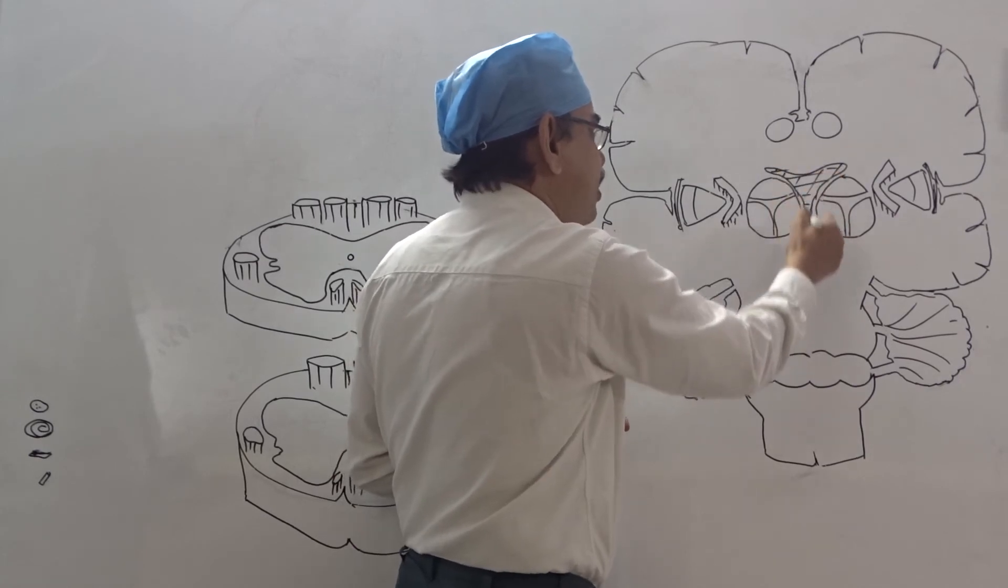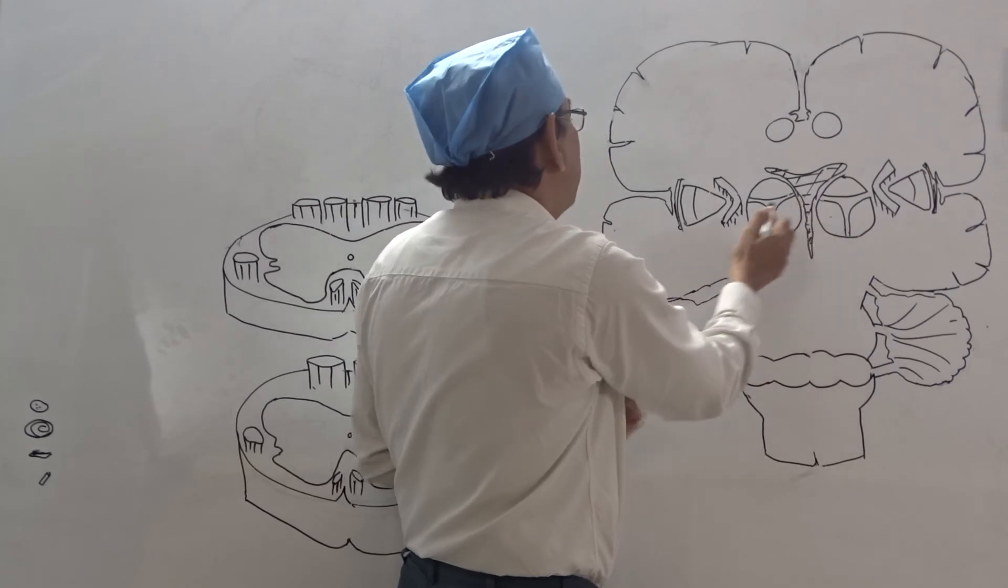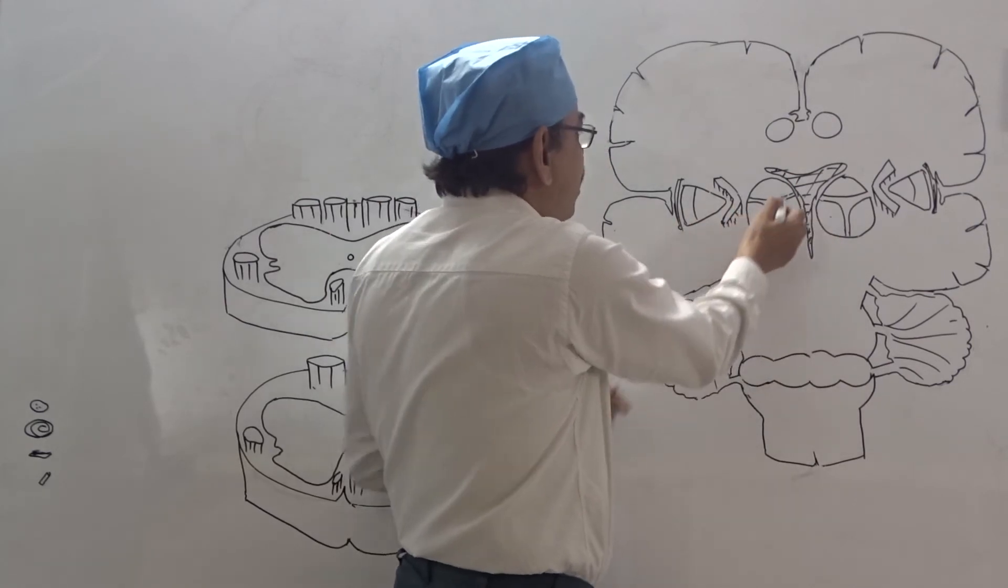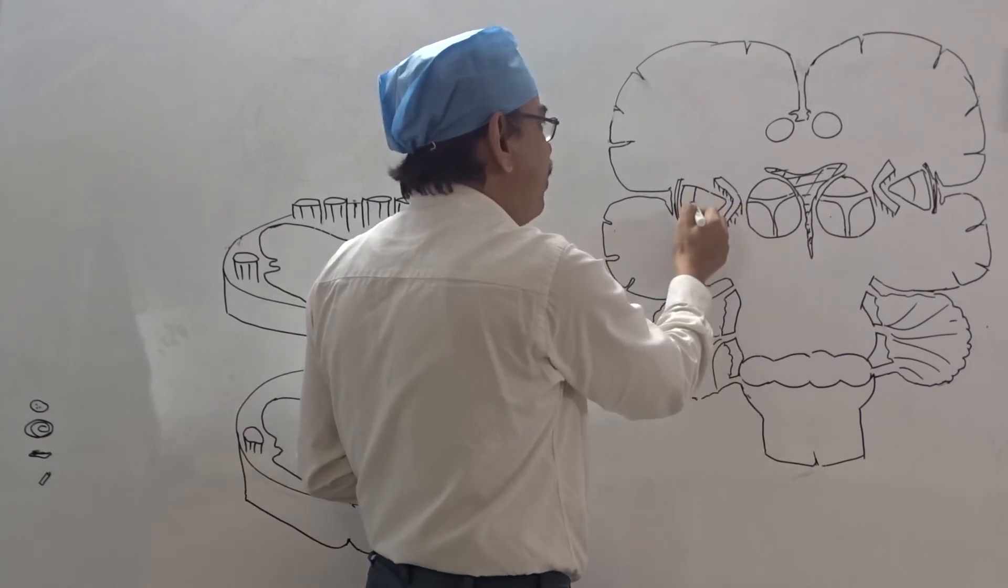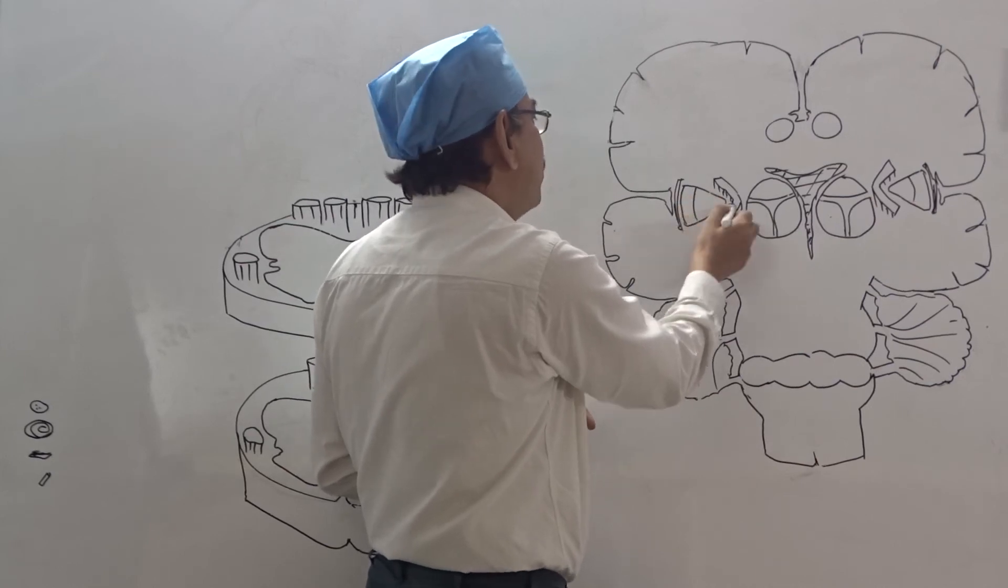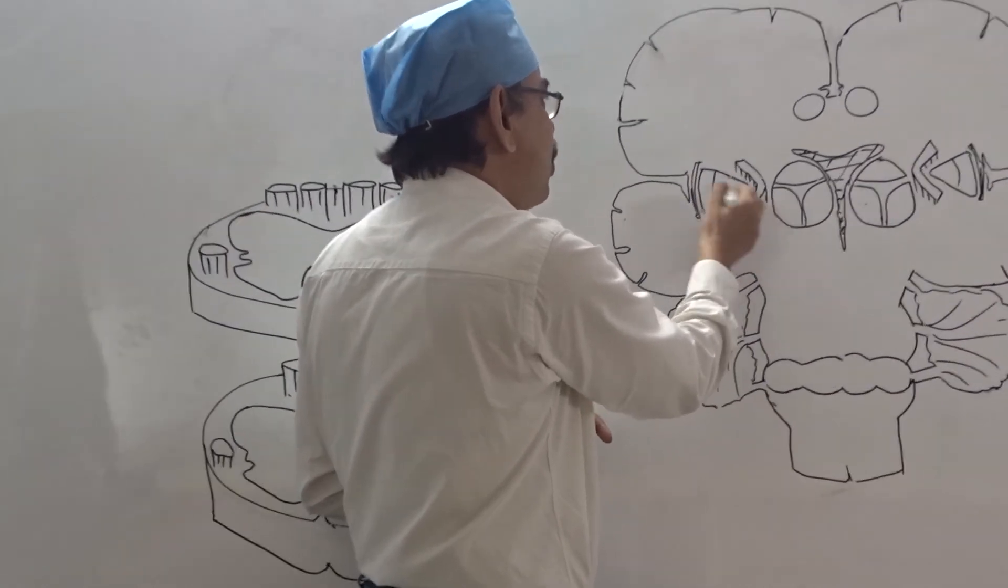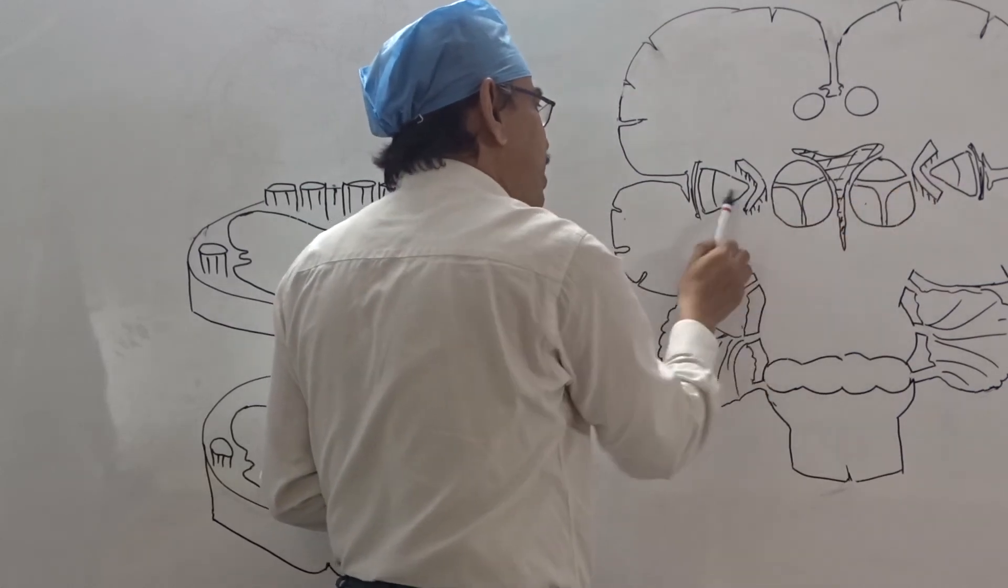These are the ventricles, the lateral and third ventricle. Lateral to the thalamus, we can see a triangular-shaped group of cell bodies. This looks like a lens, so it is called the lentiform nucleus, on both sides.